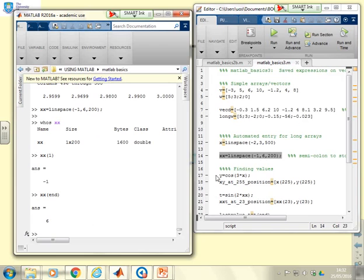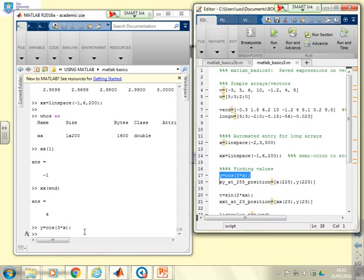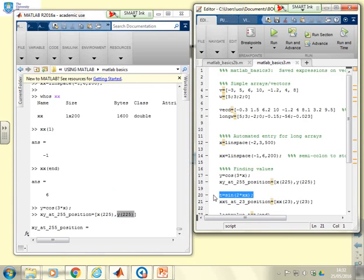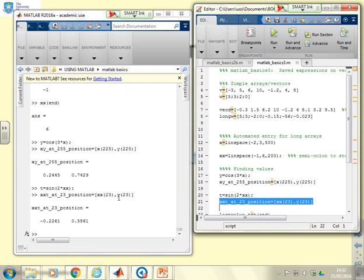I can check the values XX minus one as I expected, XX end six as I expected. So all the values are there but it hasn't flooded the screen because I put in this semicolon. Another example here. I'm going to calculate the cosine of three times x and you'll see I've used the semicolon not to flood the screen. If I want the value at the 255th position I've got this command here. I've said what's x at 225 and what's y at 225 and put those in an array which I've called XY at 255 position. Similarly here I've defined a t as being sine two times xx again with a semicolon. If I want those at position 23 there's the command XX23 Y23 and here are the answers.